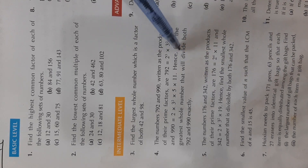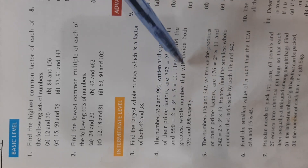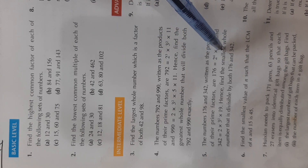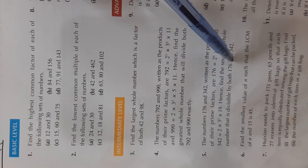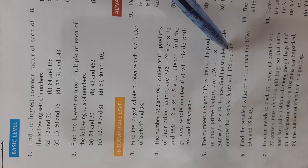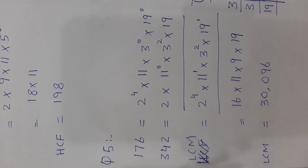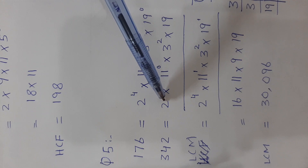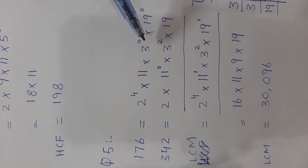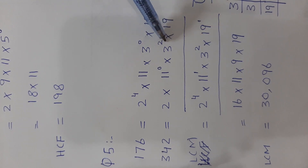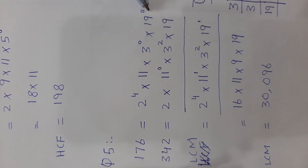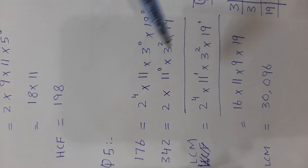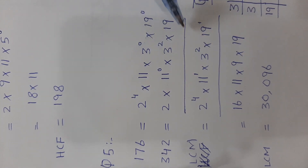When looking for the greatest whole number that divides both, that is HCF. When looking for the smallest whole number divisible by both, that is LCM. Now take the LCM of 176 and 342. 176 = 2⁴ × 11 and 342 = 2 × 3² × 19. Enter 3⁰ to complete the column of 3, 19⁰ to complete the column of 19, and 11⁰ to complete the column of 11.